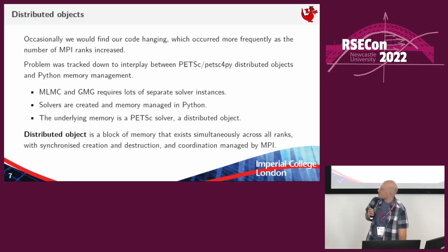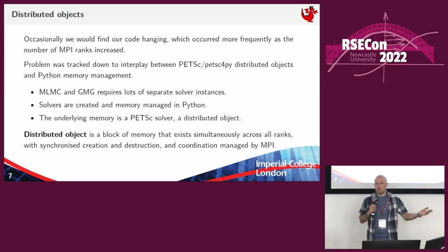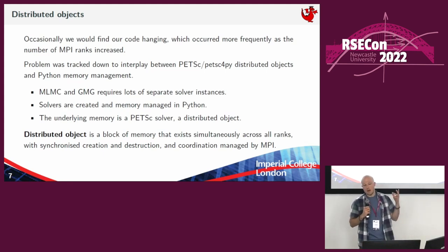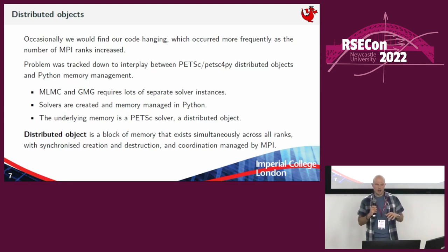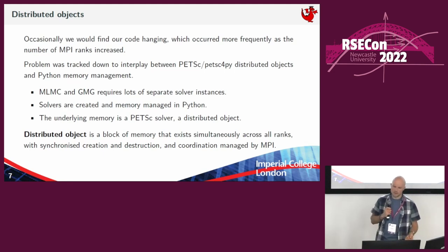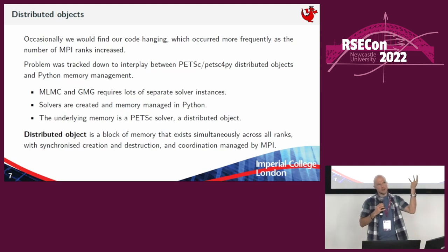Now I'm going to talk about what distributed objects are. The relevance is that in FireDrake we would find our code occasionally hanging when using FireDrake in parallel. This was happening more frequently the more MPI ranks we were using, and it would happen non-deterministically. We tracked the problem down to the interplay between PETSc — our solver library — PETSc4Py distributed objects, and Python's internal memory management. Things like Monte Carlo simulations, multi-level Monte Carlo, and multigrid simulations require lots and lots of instances of these PETSc4Py objects — things like a solver instance, a vector object, or a matrix. These are all created at the high Python level, but the underlying memory was in C, in PETSc at the C level.